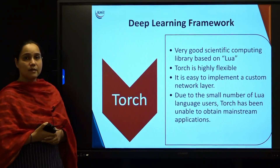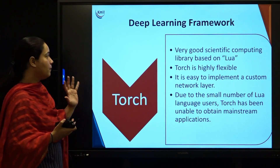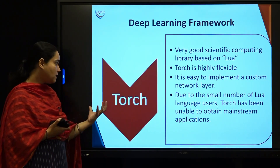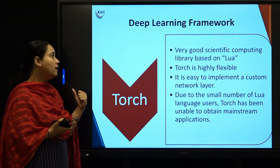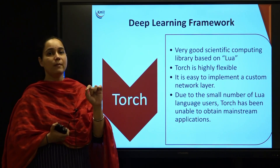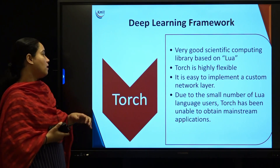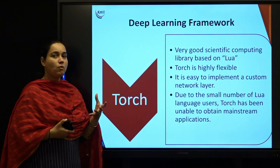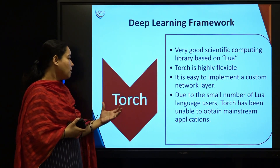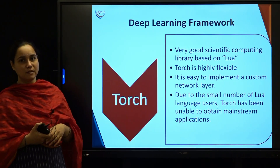Next is Torch, a very good scientific computing-based library. It is based on the language called Lua and is highly flexible, making it very easy to implement any customized layer. However, because Lua is not very popular and the number of users is low, Torch could not make it into mainstream applications and remained unpopular.